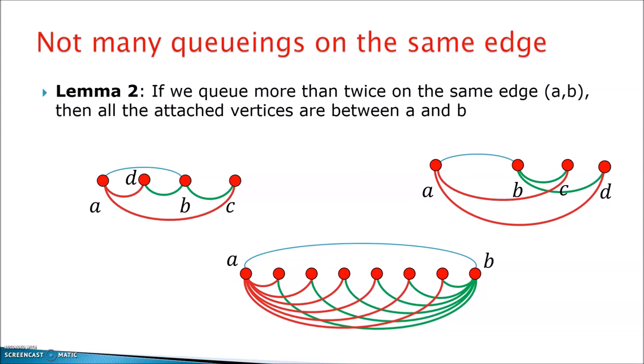What about queueing then? Is it useful to queue a lot on the same edge? Well, here we cannot prove that things cannot be done, because in fact, you can queue many times, as many times as you like on the same edge. However, what we can prove is that if you do it more than twice, then you must place all the vertices that are inserted by these queueings really in between in the layout, in between the two endpoints of the edge you are queuing to.